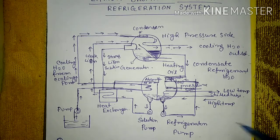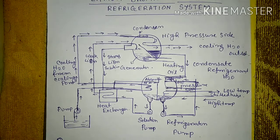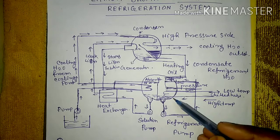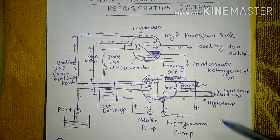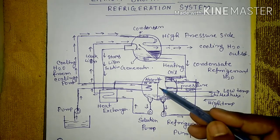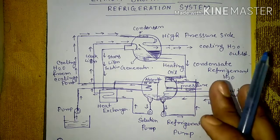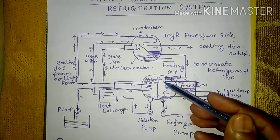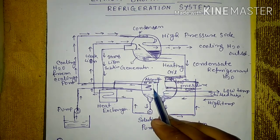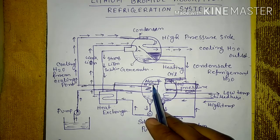When the sprayed water contacts the high-temperature chilled water tube, it evaporates, forming water vapor. Since the evaporator and absorber are on the low pressure side, this water vapor travels through the channel into the absorber, where it mixes with the lithium bromide solution.